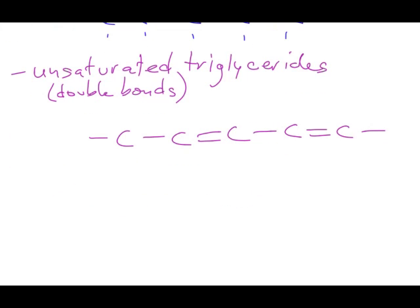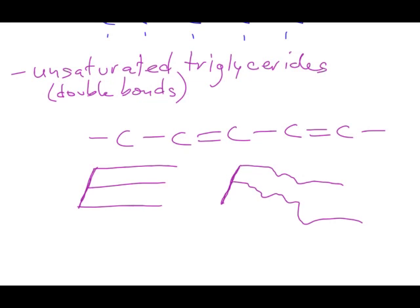With unsaturated triglycerides, we actually might have kinks in the fatty acids. I'll draw our glycerol group and the three fatty acids in a chain. With unsaturated triglycerides, we have kinks in the fatty acids that create a lower melting point, and these are considered liquid oils at room temperature.